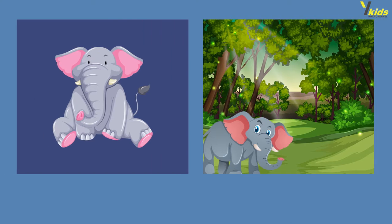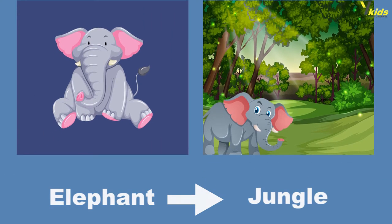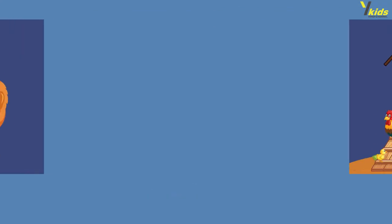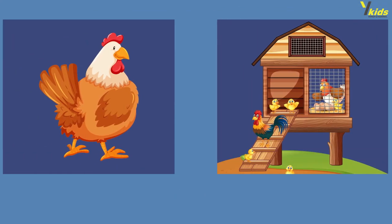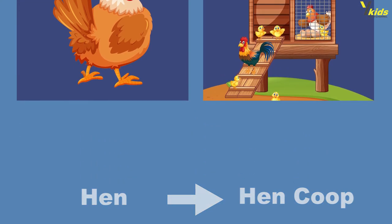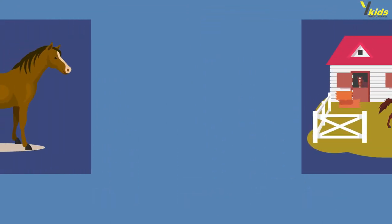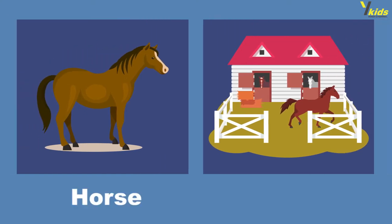Elephant — jungle. Hen — hen coop. Horse — stable.